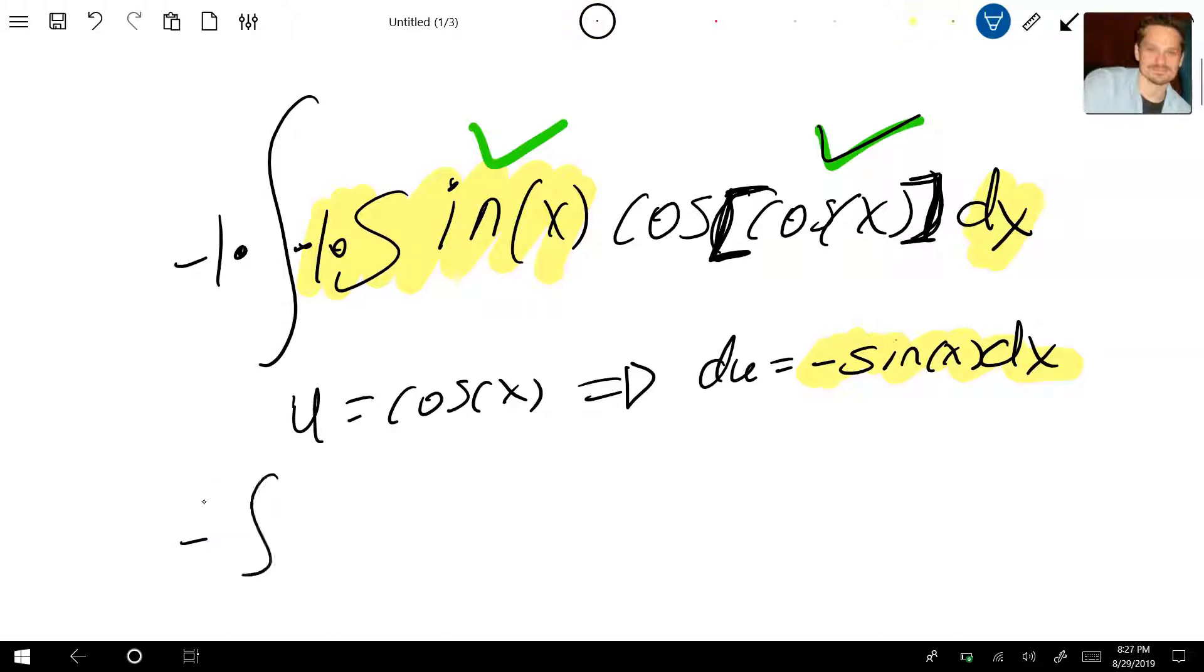Now I'm going to have negative. I'm going to now replace. So I'm going to have cosine u. And du, as you can see, is equal to negative sine x dx. So I'm just going to put du over here.